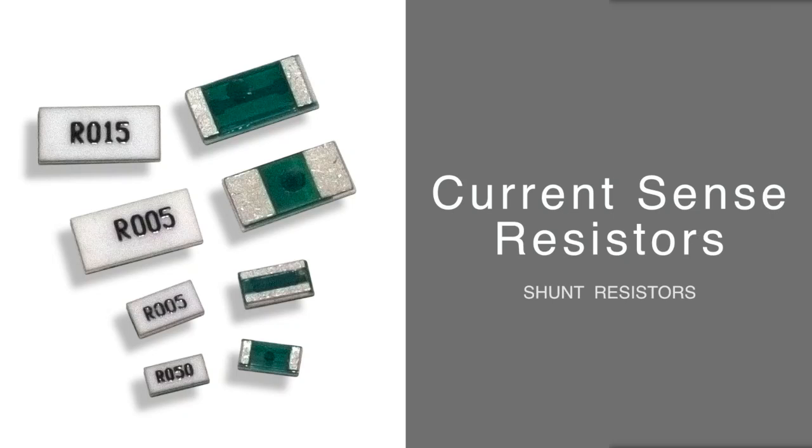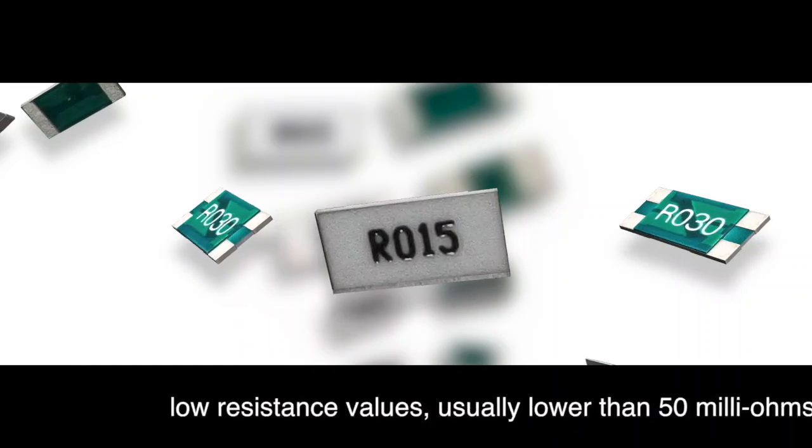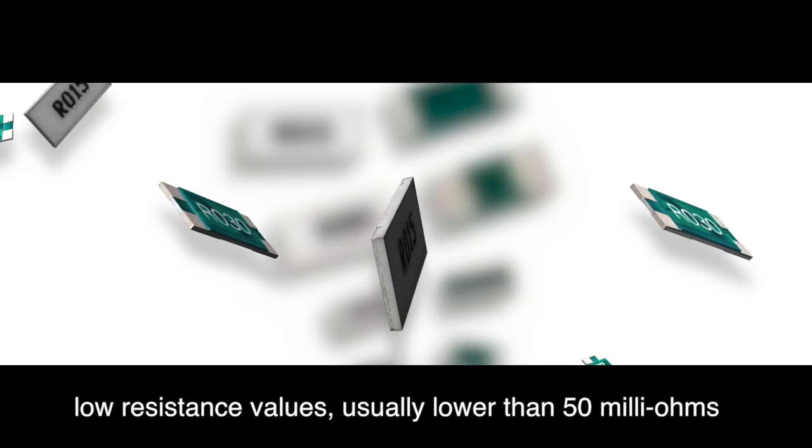One solution for these applications is the use of current sense resistors, also called shunt resistors, that monitor the amount of current flowing through a circuit. These resistors have very low resistance values, usually lower than 50 milliohms.